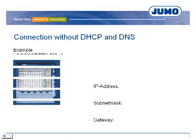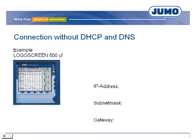However, some UMO devices work with a fixed IP configuration. In this case, the configuration of the respective device must be adjusted manually. This IP address has to be excluded from DHCP and cannot be allocated to another device.